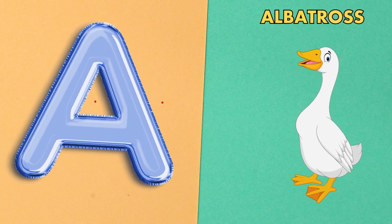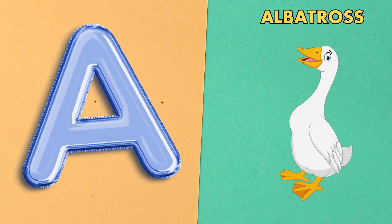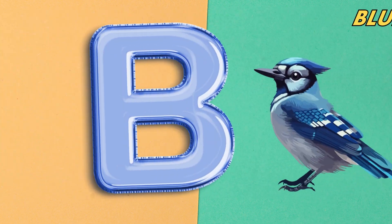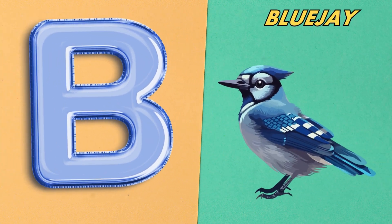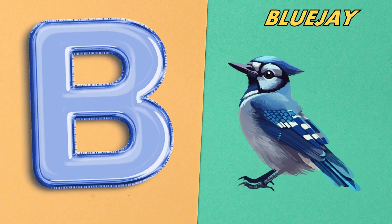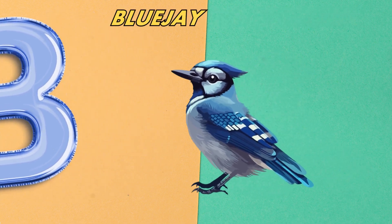A is for albatross. Albatross. B is for blue jay. Blue jay.